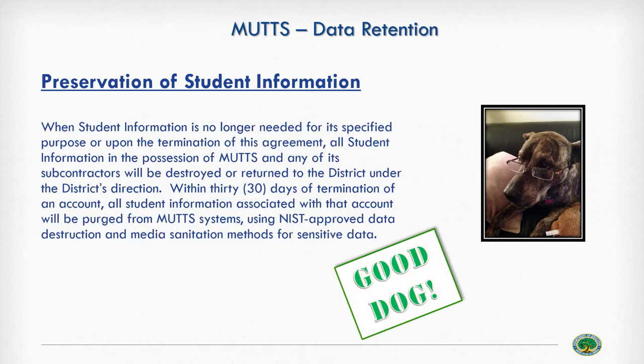A better provision: when student information is no longer needed for its specified purpose or upon termination of this agreement, all student information in the possession of MUTTS and any of its subcontractors will be destroyed or returned to the district under the district's direction within 30 days of termination. All student information associated with that account will be purged using NIST-approved data destruction and media sanitation methods for sensitive data. This is a good dog provision — committing to destroy or return data within 30 days and using established standards for data destruction.